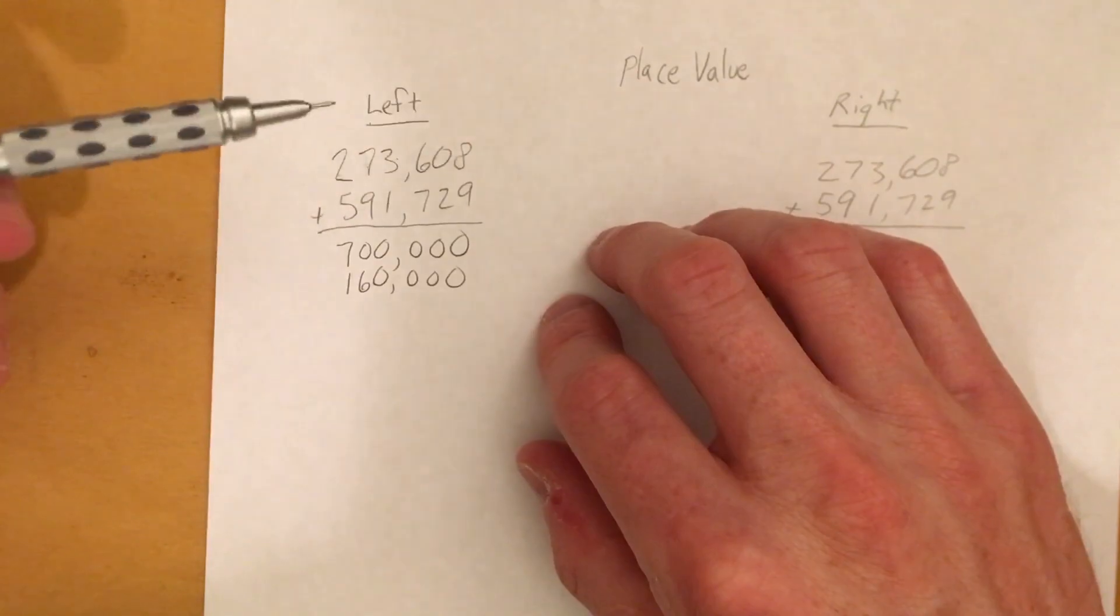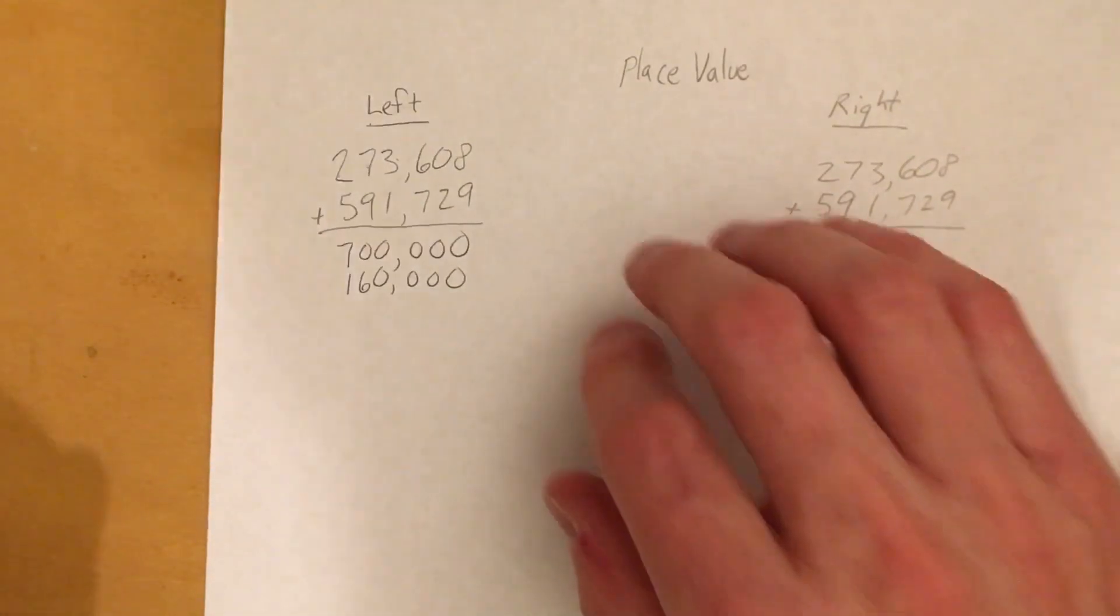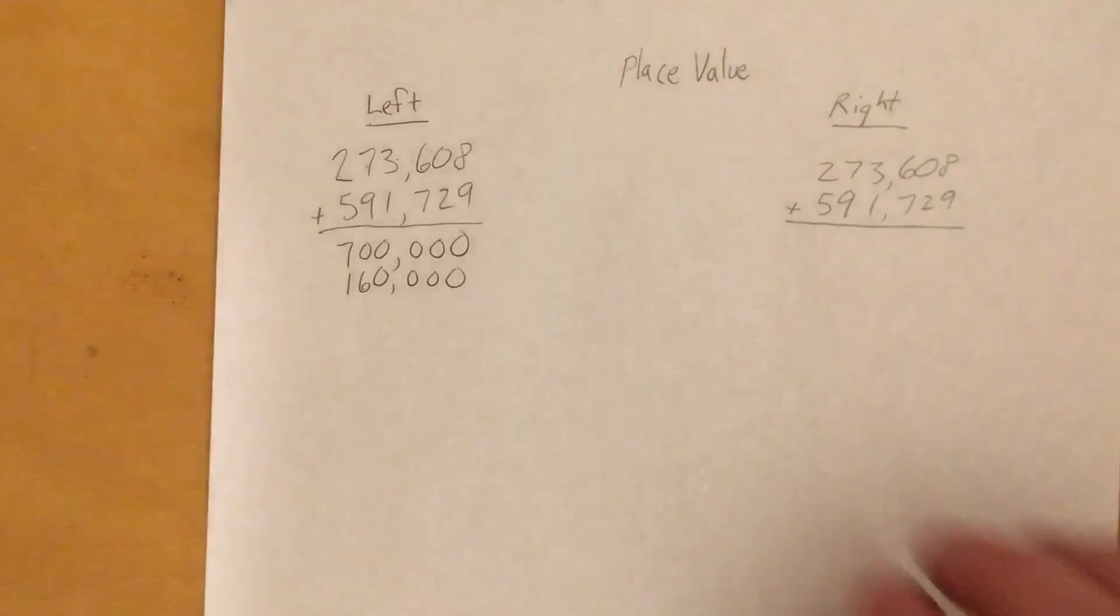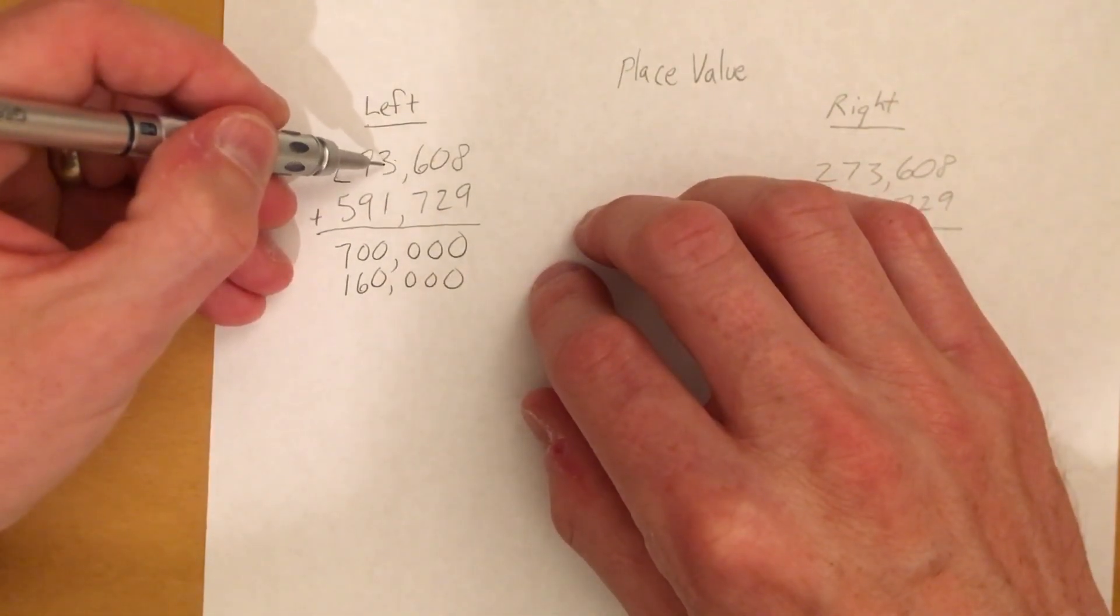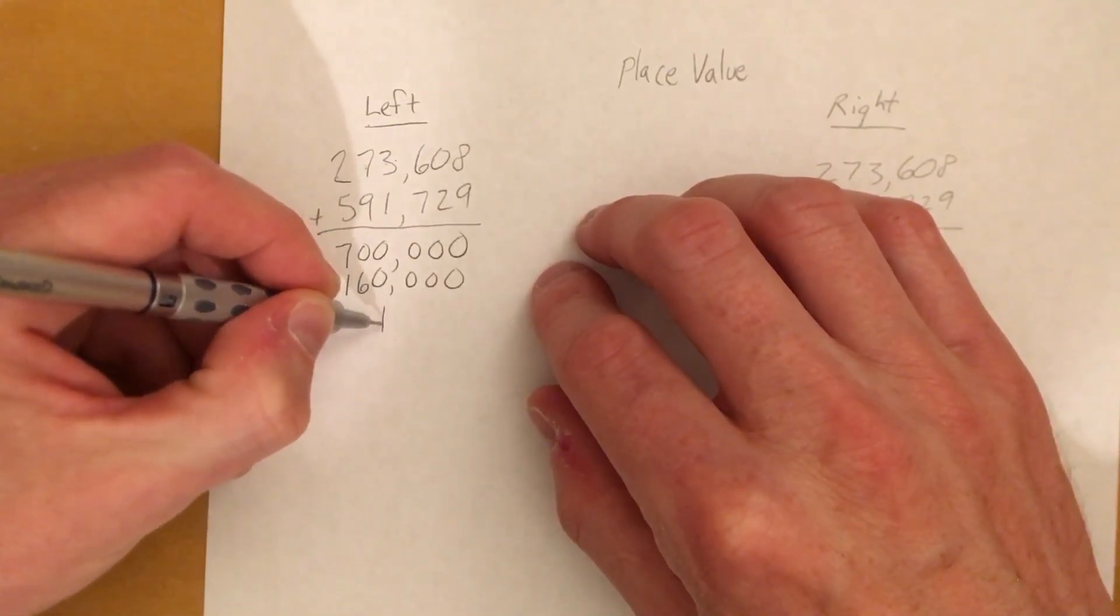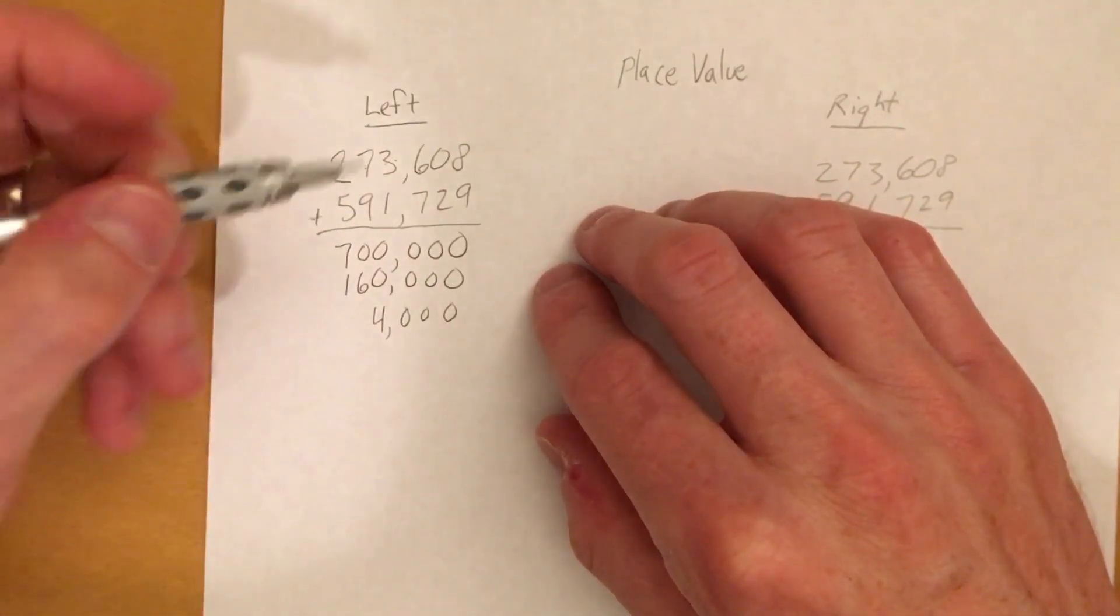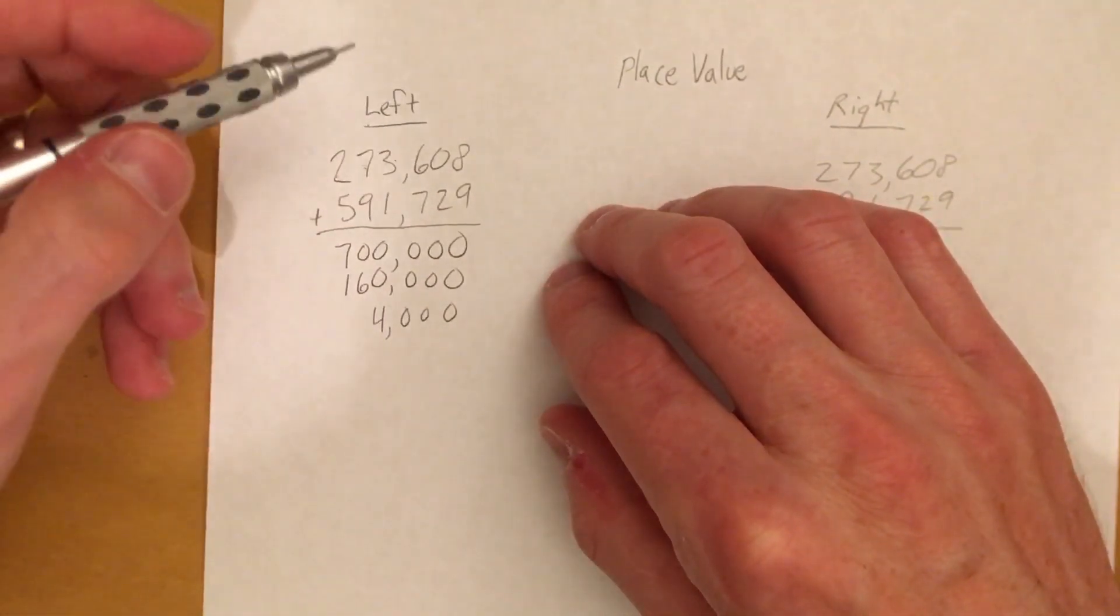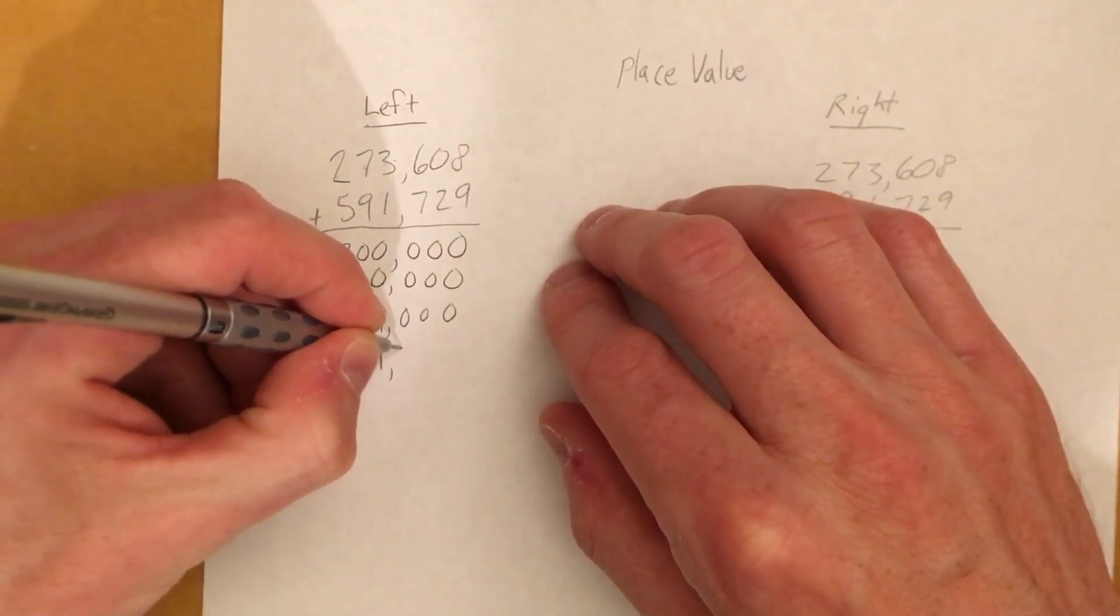We're going to keep going. So this is going to be 3,000 plus 1,000 which equals 4,000. Then moving over into our hundreds, we have 600 plus 700 which is going to be 1,300.